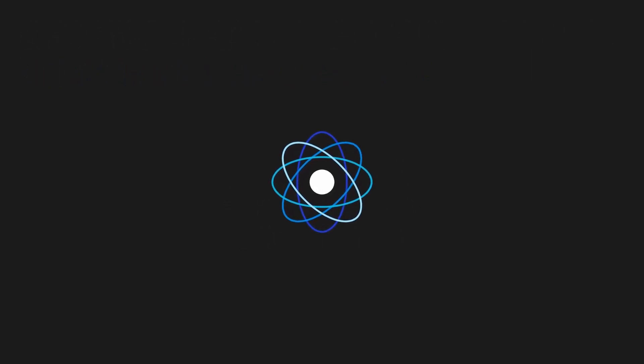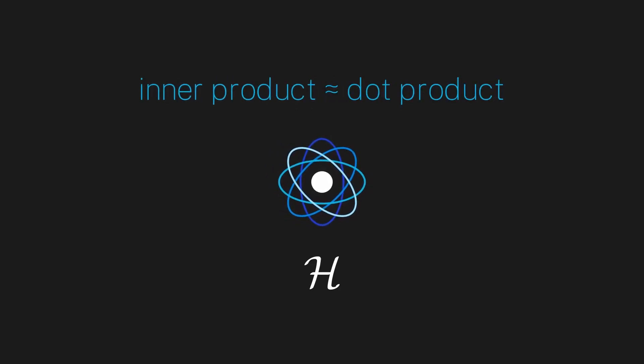Hi everyone, last episode we discussed why we need a Hilbert space to deal with an infinite vector space. In the definition of a Hilbert space, we mentioned an inner product and said it was basically like a dot product.